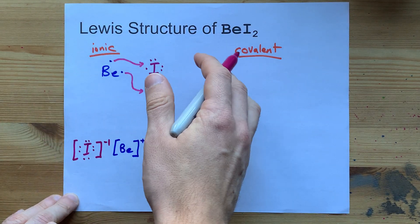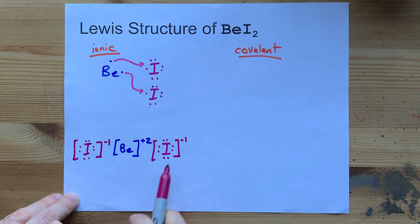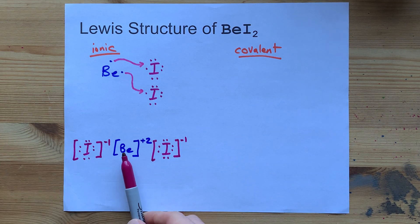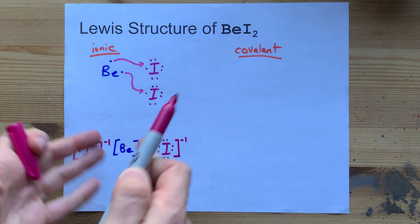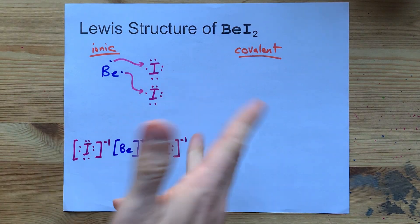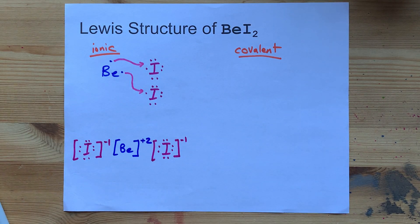This is the ionic Lewis structure for beryllium iodide, a metal with a non-metal. It kind of implies that the berylliums and the iodines are in an ionic lattice together of alternating plus and minus ions. Unfortunately, that ain't true.